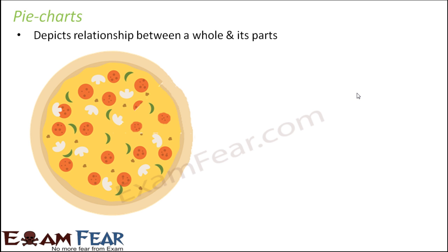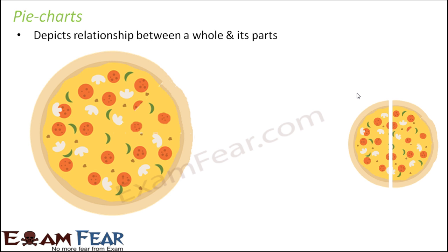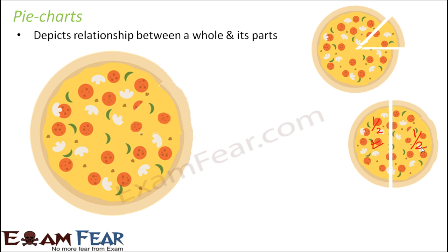A pie chart answers what part of the complete thing we are dealing with. The best example is a pizza. If this pizza has been divided into two equal parts, each part is half of the pizza — one part out of two equal parts.